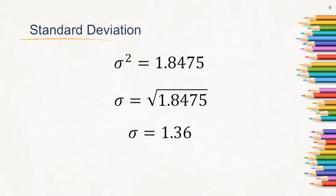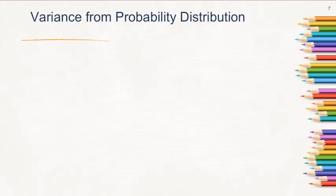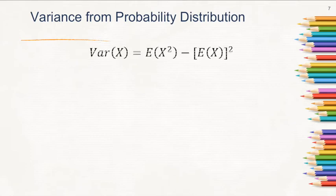That is how we calculate variance and standard deviation from a frequency distribution table. Now, if the given is a probability distribution table, how do we calculate the variance and standard deviation? The formula is: variance of x equals E(x²) minus [E(x)]².